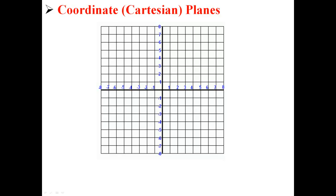Here we have a representation of a coordinate plane. Running horizontally is the x-axis. Here our x-axis runs from negative 8 to positive 8.